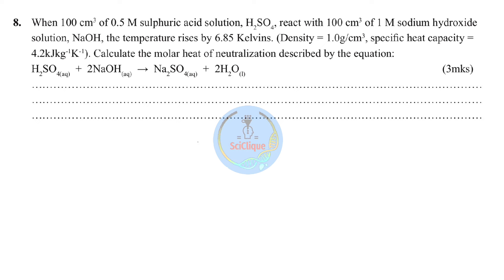Question eight: when 100 cm³ of 0.5 M sulfuric acid reacts with 100 cm³ of 1 M sodium hydroxide, the temperature rises by 6.85 K. Density is 1 g/cm³, specific heat capacity is 4.2 kJ/kg/K. Be very careful with units — if the specific heat capacity is in kilograms, convert mass to kilograms by dividing by 1000. Calculate the molar heat of neutralization.